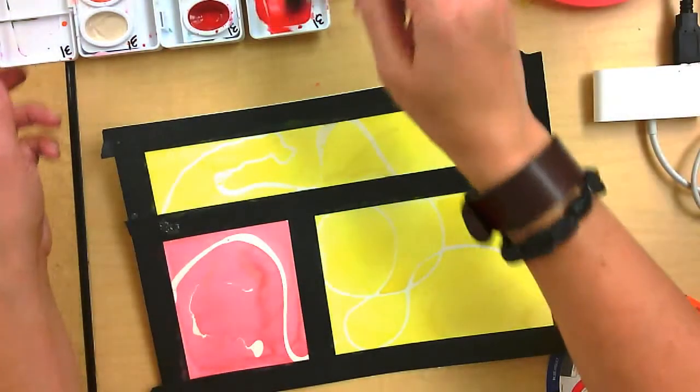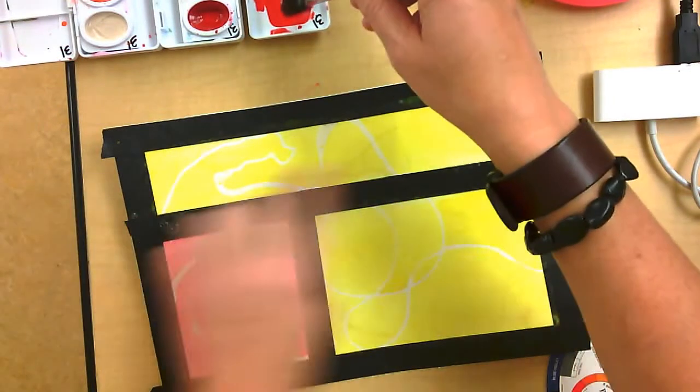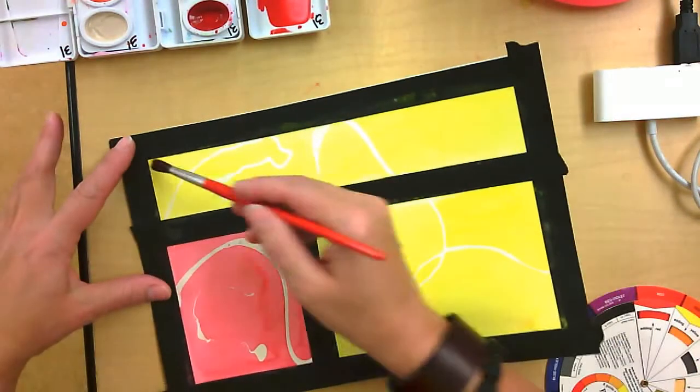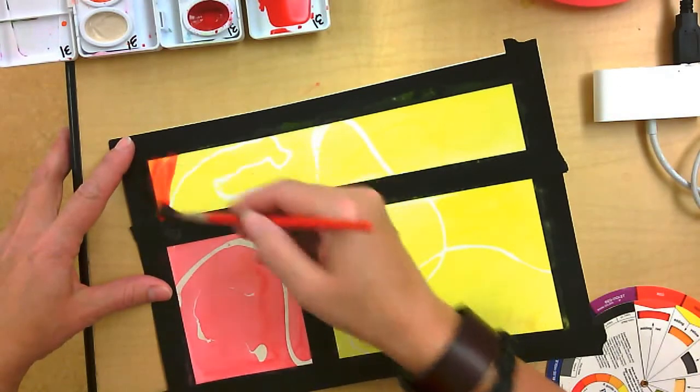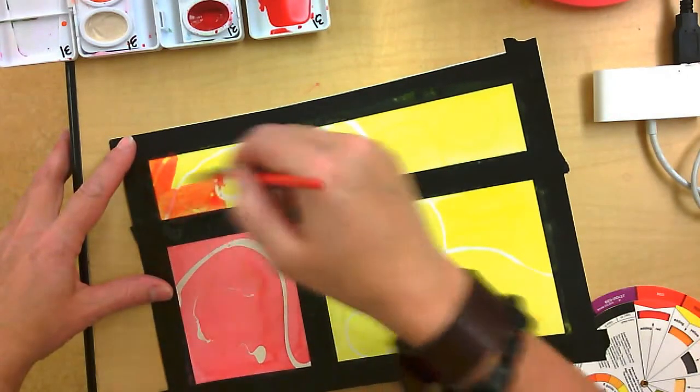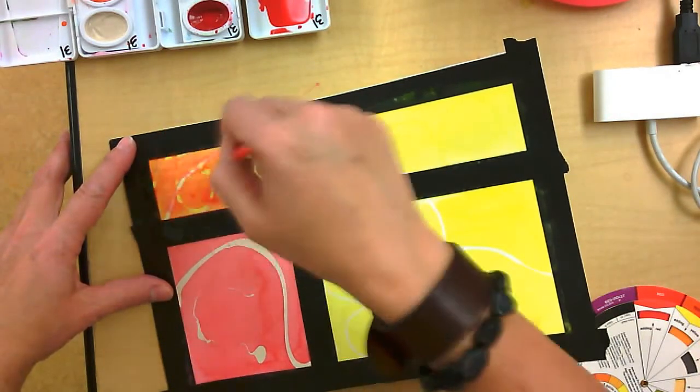I'm going to take some of my red paint and work up here and make this orange by adding the red over the top of my yellow.